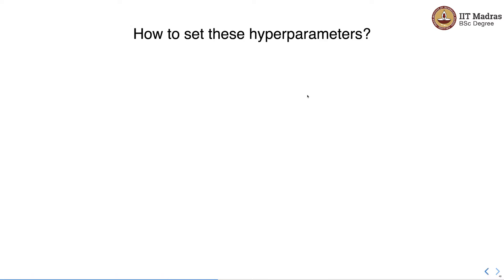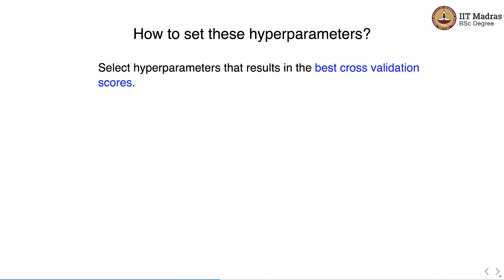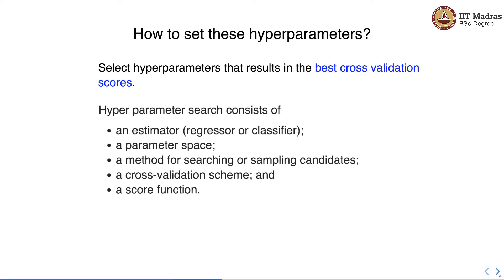So how do we set these hyperparameters? We normally select hyperparameters that result in the best cross-validation scores. Hyperparameter search consists of five different objects: we need an estimator which is either a regressor or classifier, a specification for the parameter space, a method for searching or sampling candidates, a cross-validation scheme, and a scoring function.